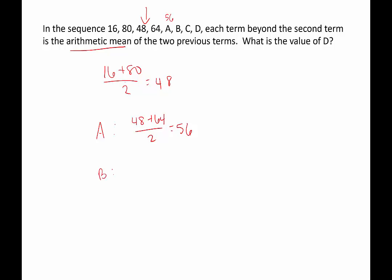To figure out B, we take the previous two terms, 64 plus 56, and divide by 2. Well, 64 plus 56 is 120, and 120 divided by 2 is 60. See, this is kind of like going back and forth—low, high, low, high—but they're getting closer and closer together.